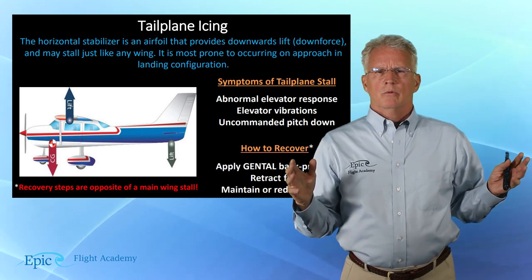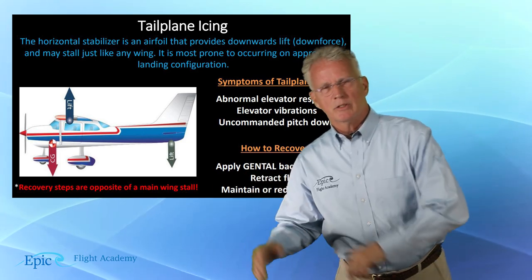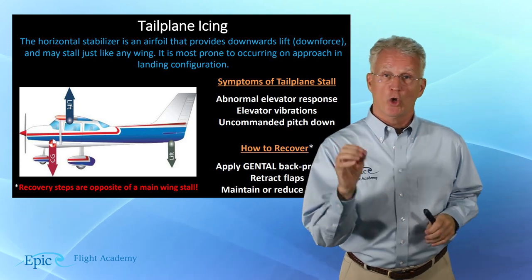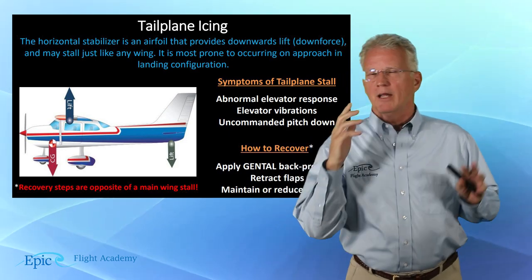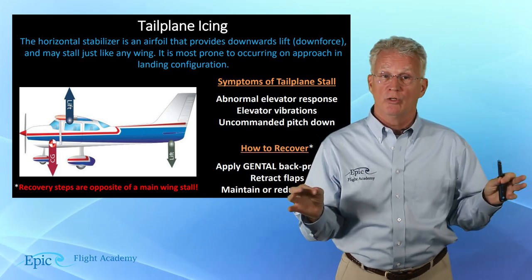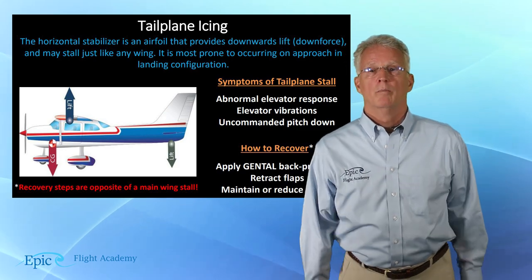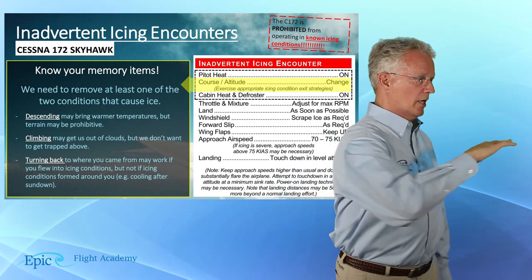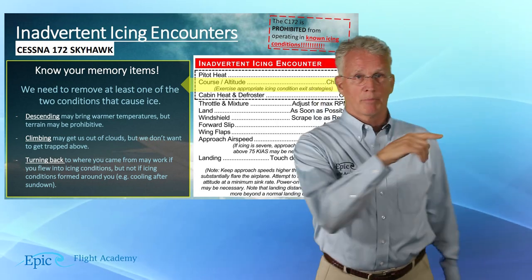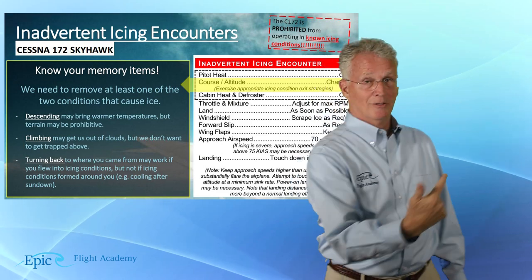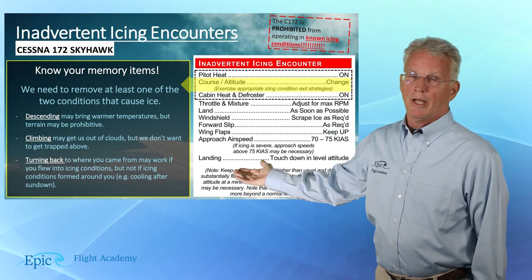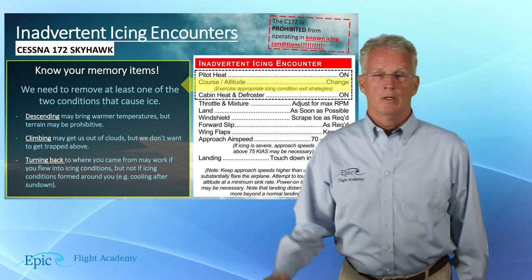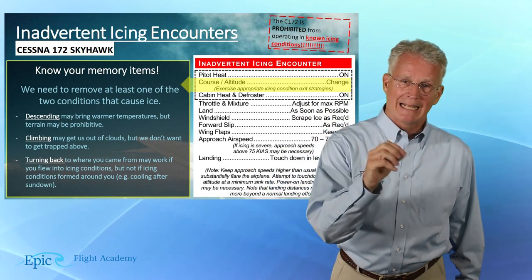What do you do if you have an inadvertent icing encounter? The 172S is prohibited from operating in known icing conditions, but inadvertent encounters are possible. First, turn the pitot heat on. Next, change course — if there was no icing behind you but you're getting into icing now, turning around is one of your best courses of action. From EPIC's checklist for inadvertent icing encounters: pitot heat on, change course or altitude, cabin heat and defroster on.